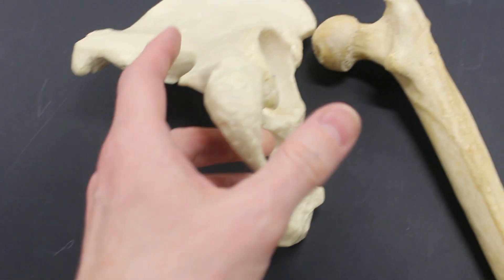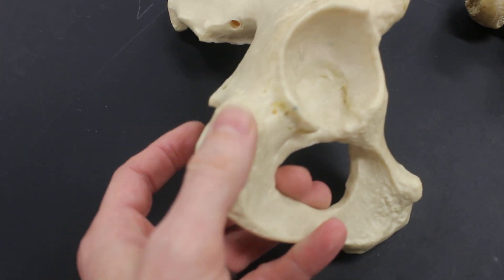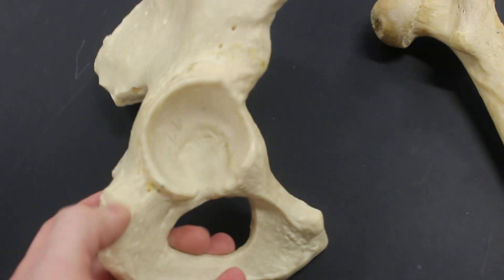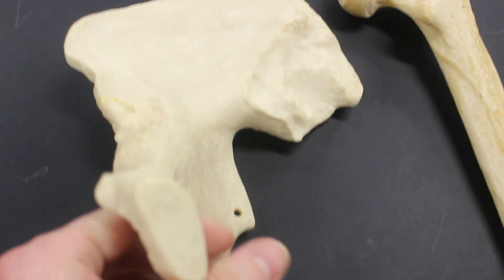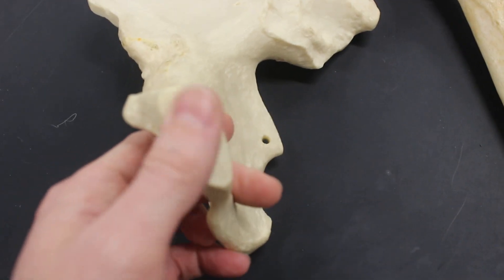Then on the ischium down here, this rough area here is the ischial tuberosity. On the pubis we have the flat region here, the pubic symphysis.